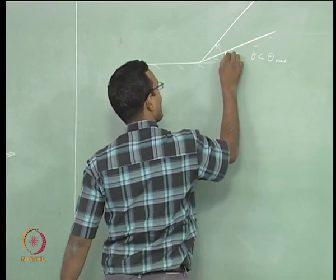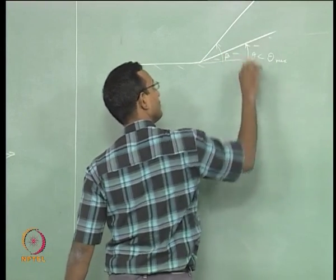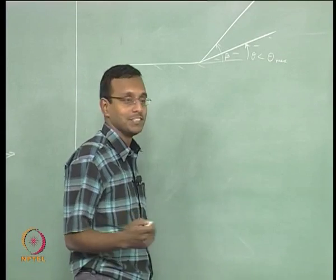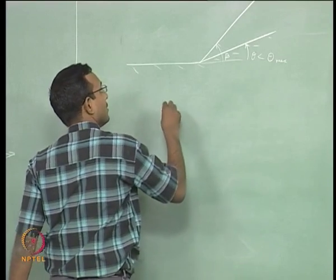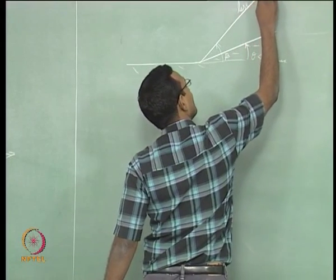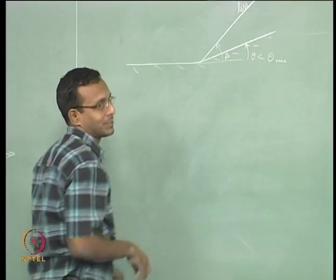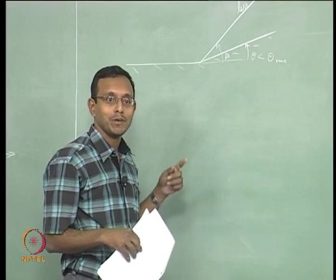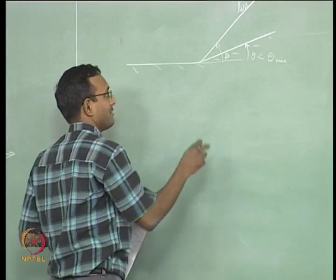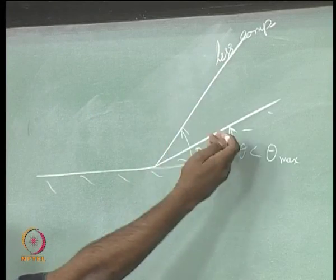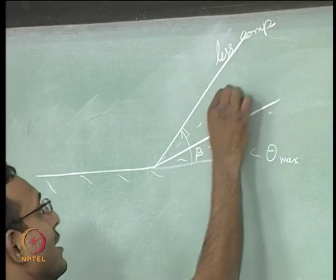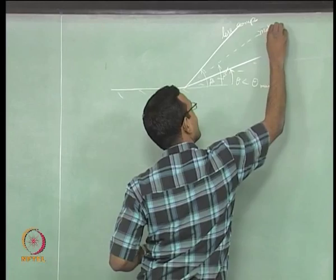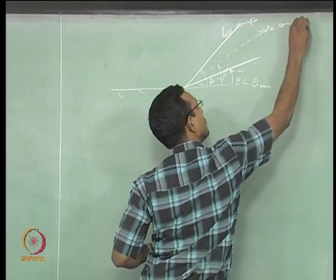For the weak shock, I have a particular beta for one gamma value. When I say gamma decreases (more compressible gas), one way to think about it: gamma is lower so the speed of sound is lower. The wave from the corner does not propagate as far against the flow, so it will end up with a smaller beta (beta prime). A more compressible gas gives a lower beta for the weak shock solution.